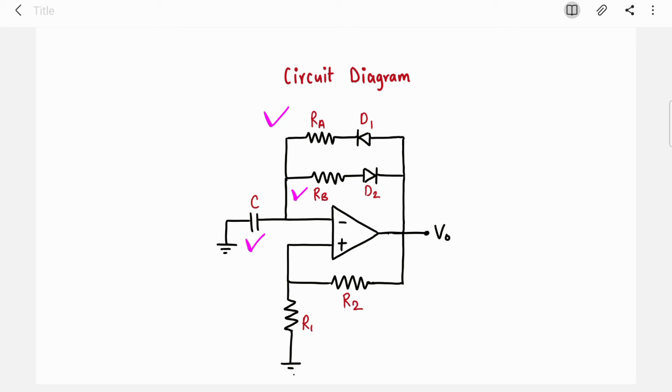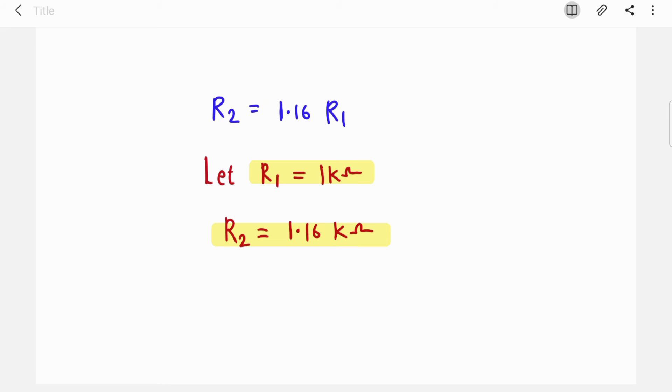Now we know the values of C, RA, and RB. Now we have to find values of R1 and R2. It is very simple. You should know this equation: R2 is 1.16 times R1. You can watch my previous videos, I have derived this equation. We will assume value of R1 as 1 kilo-ohm and R2 will come out as 1.16 kilo-ohms.